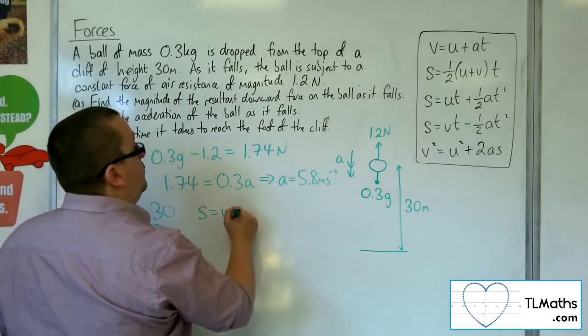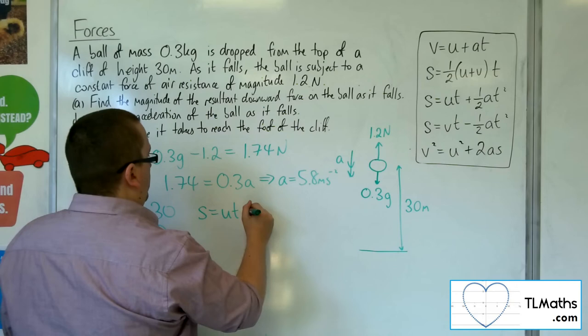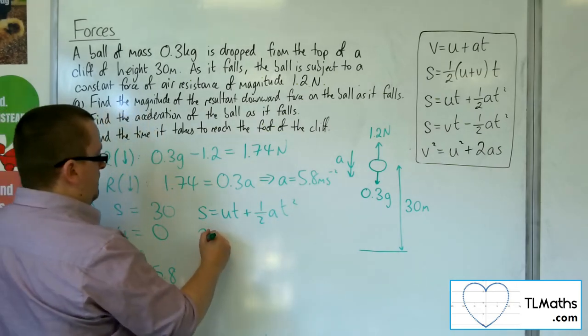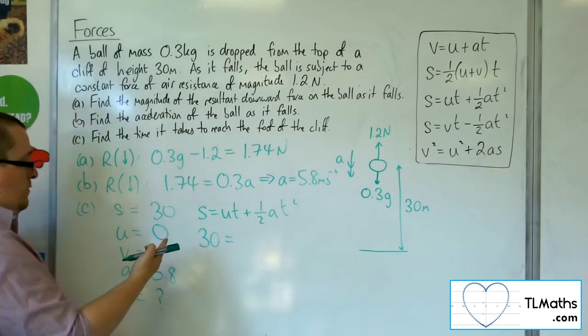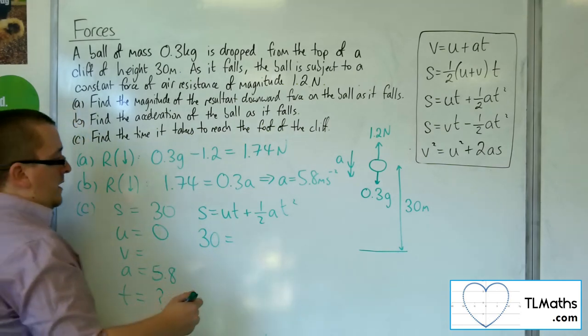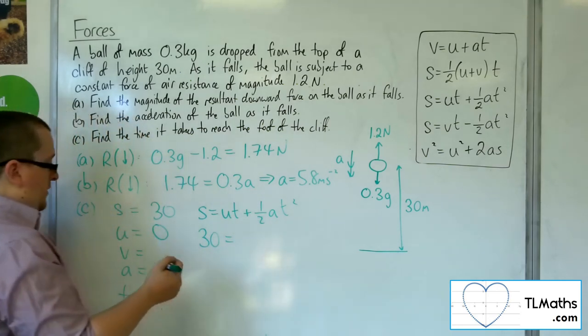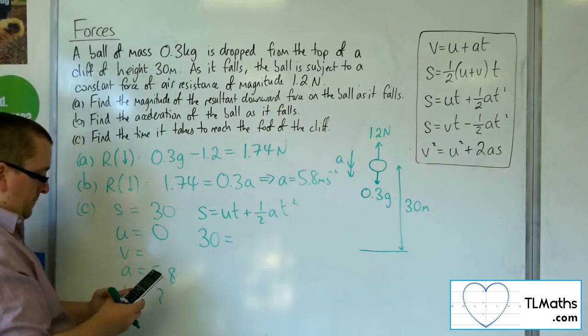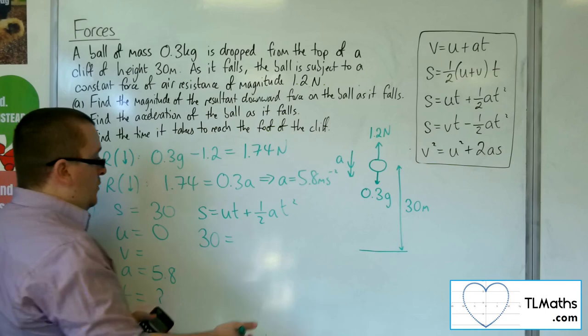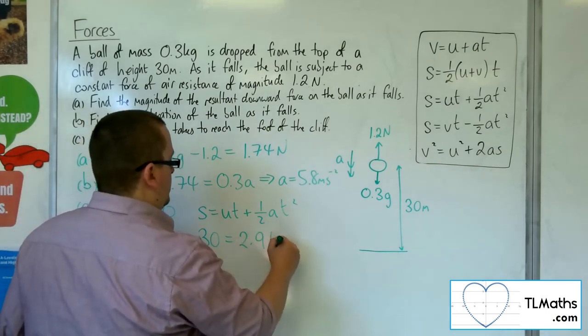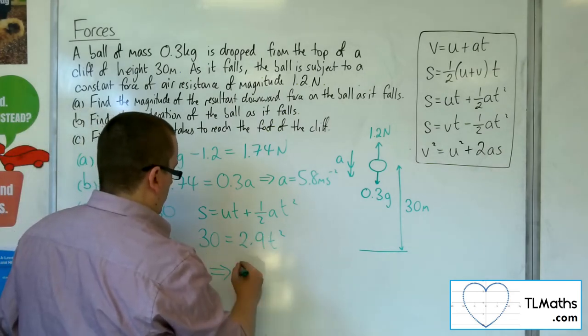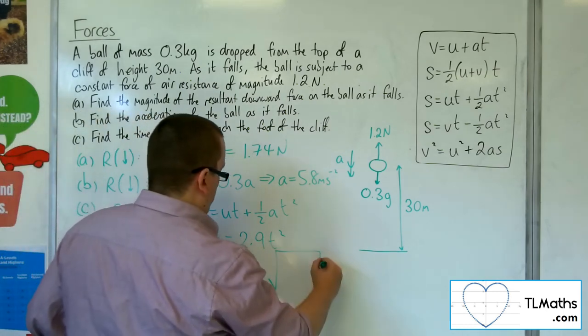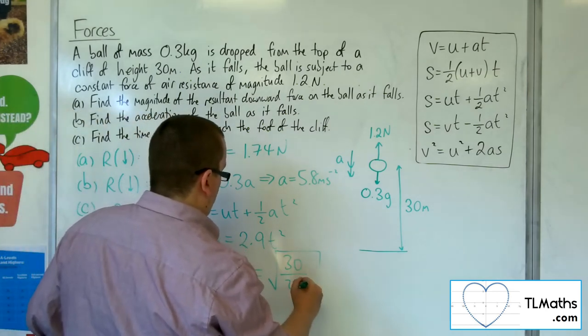So s equals ut plus 0.5at squared. So s is 30, u is 0, so 0 times t is 0, plus 0.5 times a, so 0.5 of 5.8 is 2.9, so 2.9t squared.